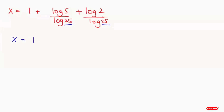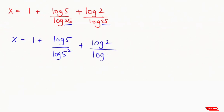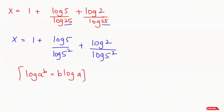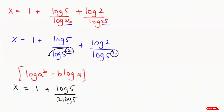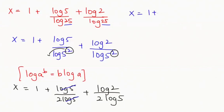So x equals 1 plus log of 5 over log of 5 squared, plus log of 2 over log of 5 squared. Now I'm going to take this power in front in both terms. The next expression we get is x equals 1 plus log of 5 over 2 log of 5, plus log of 2 over 2 log of 5. Here log of 5 and log of 5 get cancelled, giving x equals 1 plus 1 over 2.